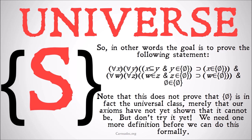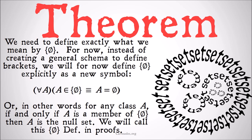Merely that our axioms have not yet shown that it cannot be. We need one more definition before we can do this formally: we need to define exactly what we mean by {∅}. For now, instead of creating a general schema to define curly brackets, we're just going to define that as its own symbol — meaning that for all classes A, A is a member of {∅} if and only if A is identical to the null set. We'll call this the '{∅} definition' in proofs.